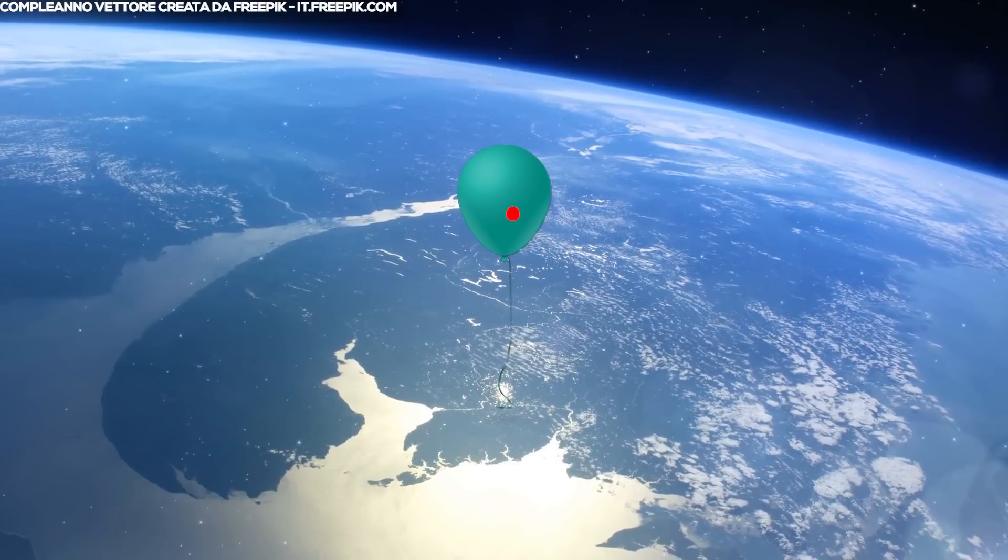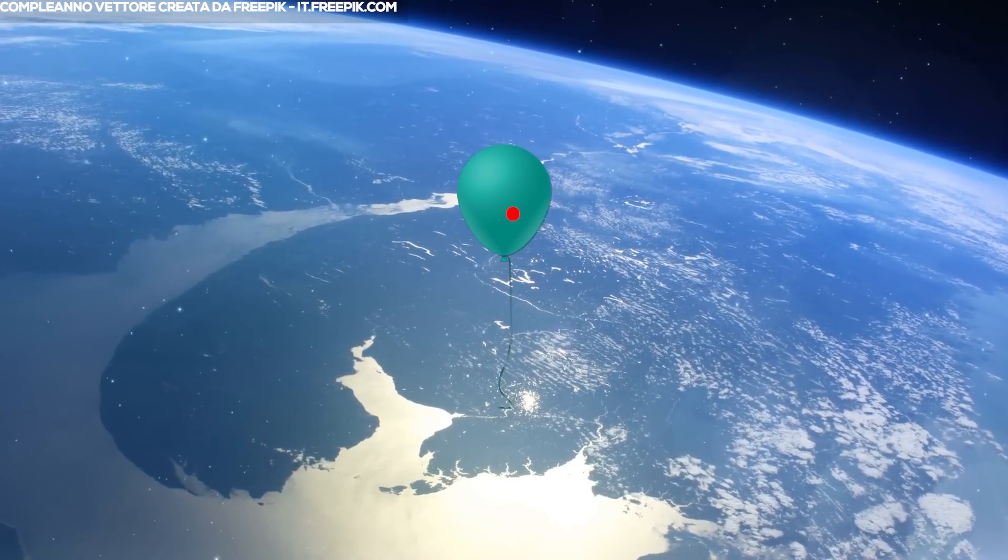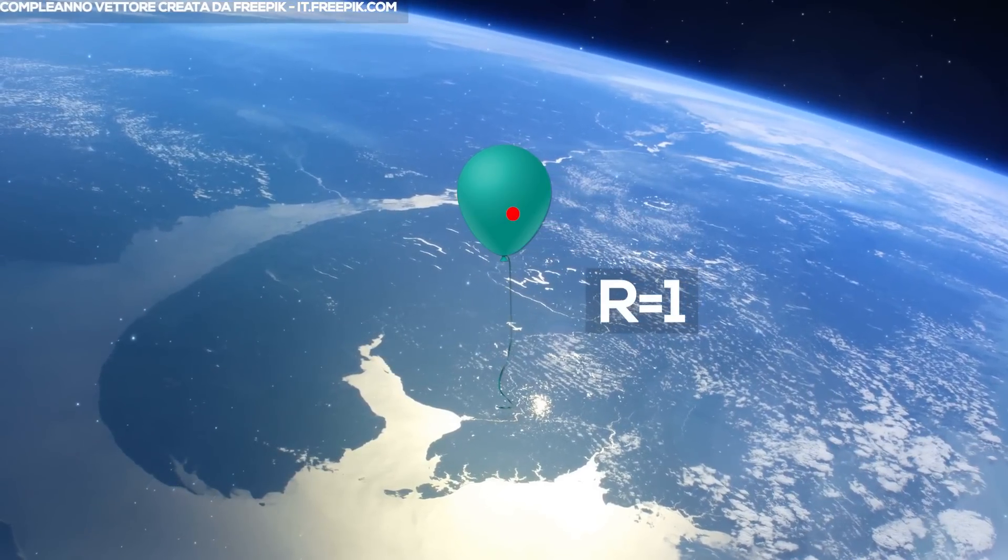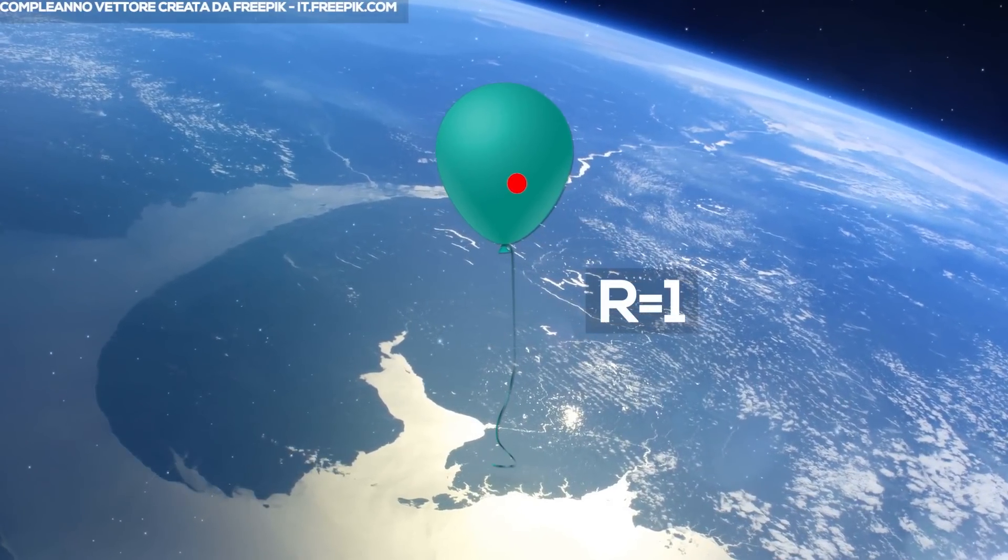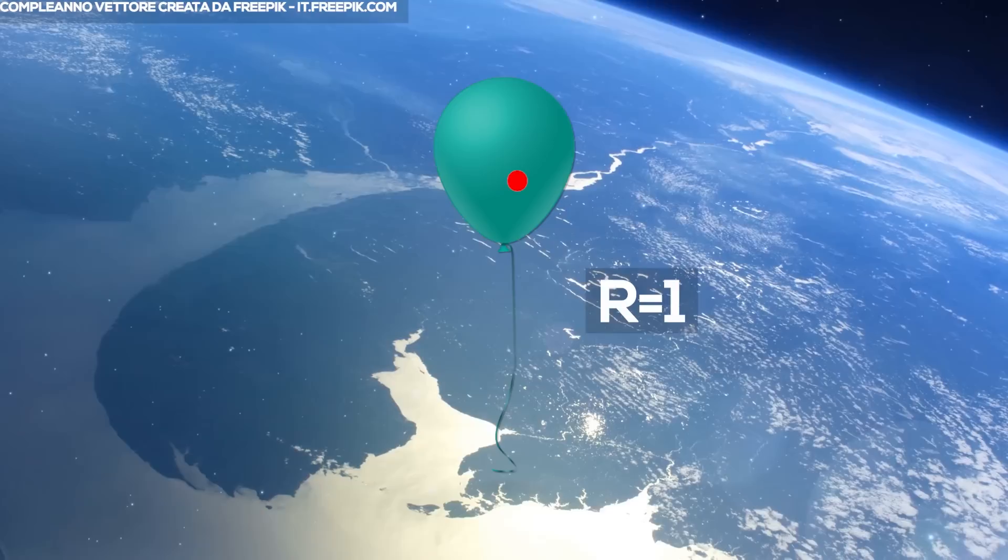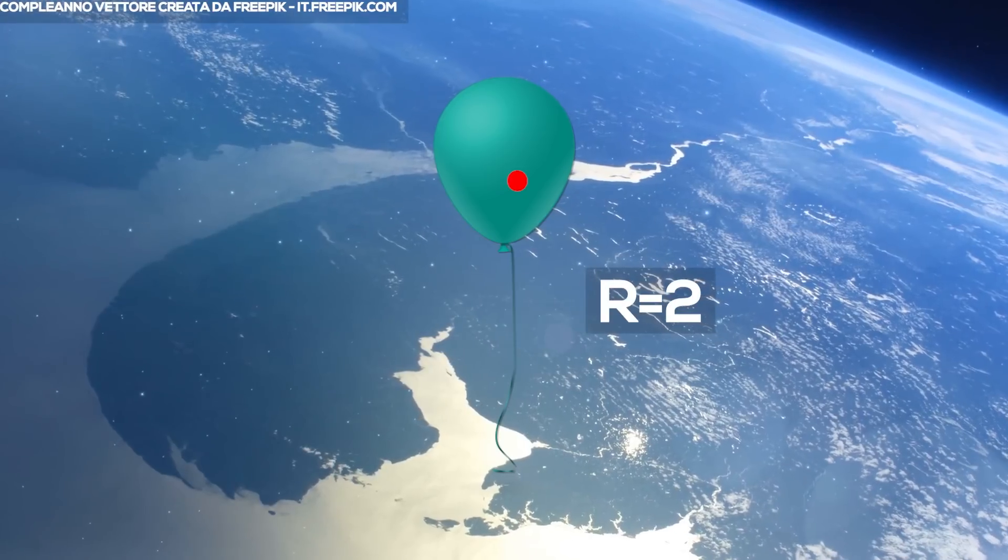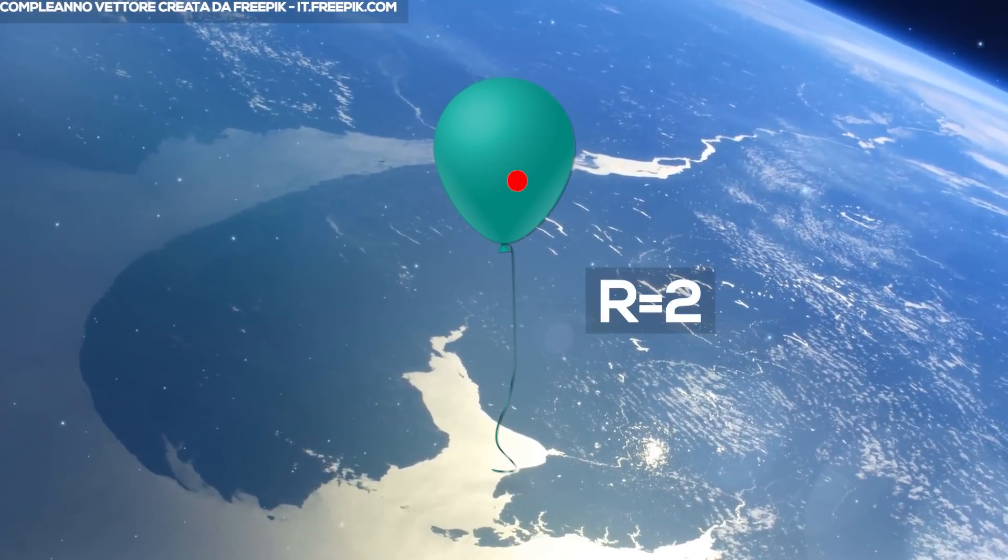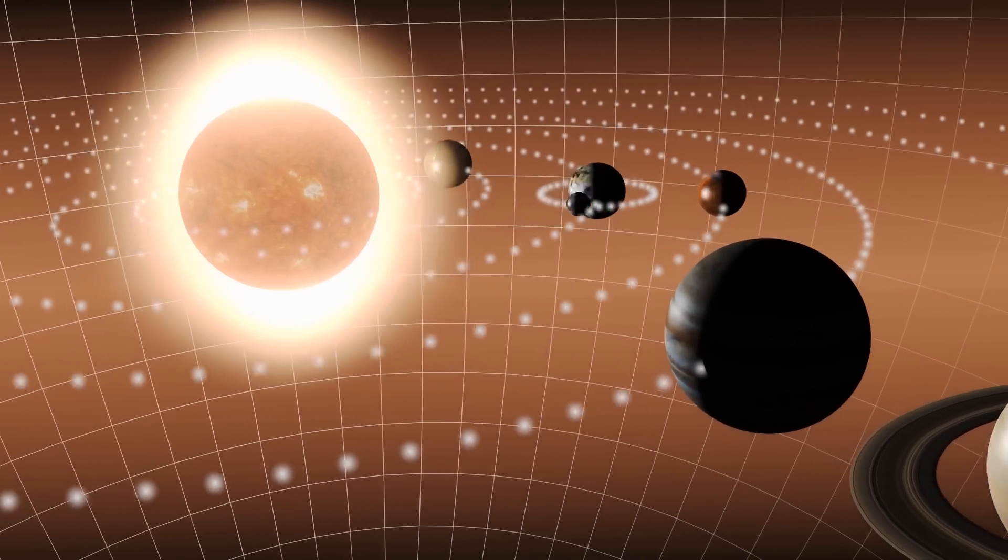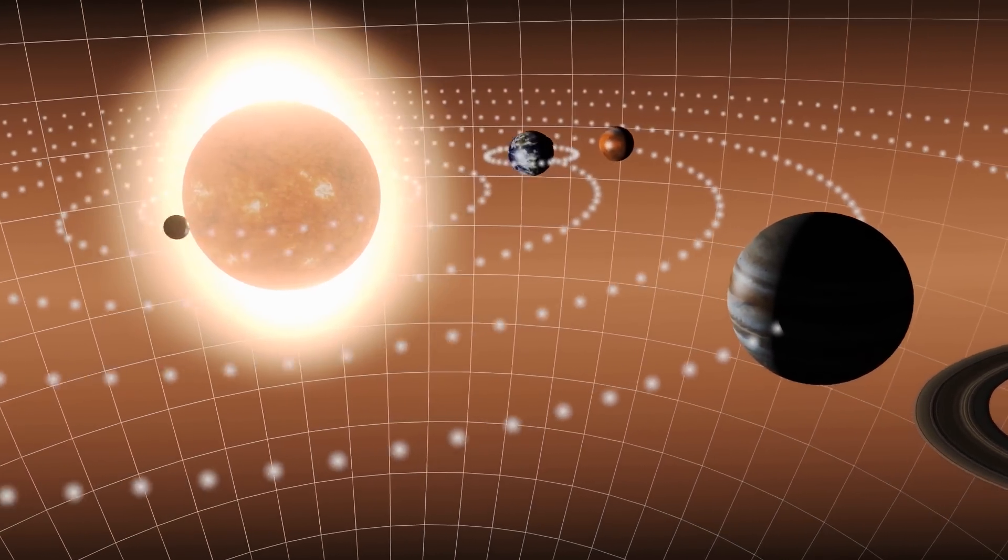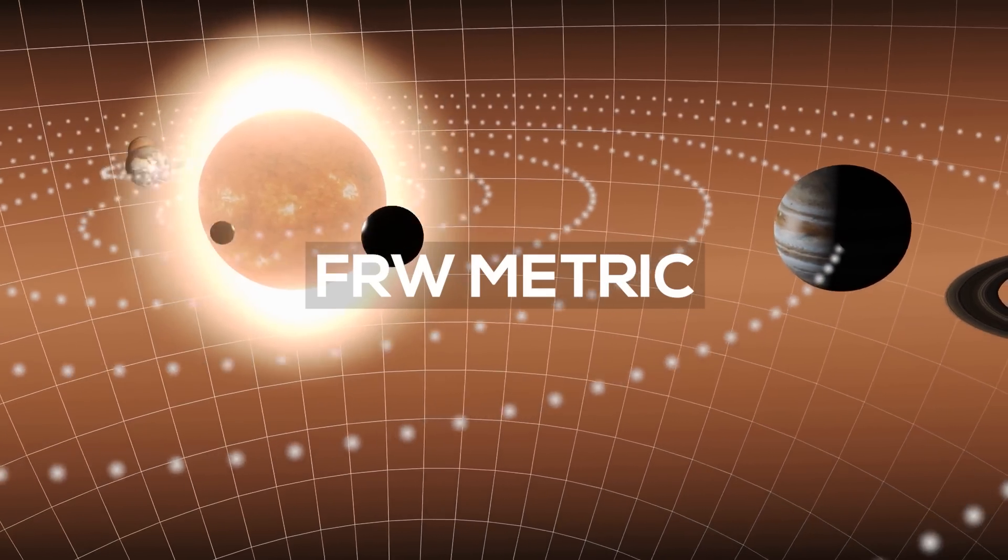A good comparison can be made with an air balloon similar to our Earth. Let's imagine that it has a scale factor R equals 1, and a little point with its coordinates is drawn on it. If we inflate the balloon and its size doubles, the point will always have the same coordinates, but the balloon will be bigger than before and its scale factor will be R equals 2. In physics, we say that the point is located by a system of co-moving coordinates that don't change in time, and the size of the balloon is described by the scale factor that changes in time if the size increases or decreases. This system is also known as FRW metric.